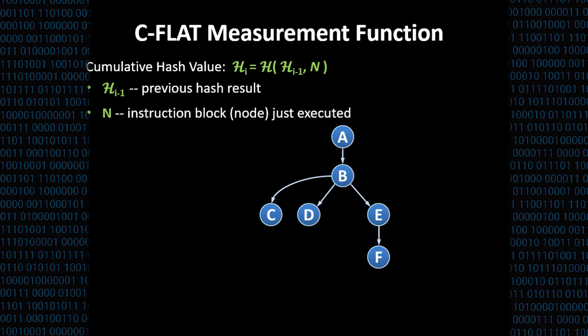Inspired by the traditional static binary attestation, which calculates a hash over the binary, we extend the scheme to also apply to control flow transitions, where we have a hash measurement function that takes two inputs. One is the previous hash, meaning the hash of the previous control flow transition, and the node just executed. Given a simple control flow graph, the hash calculation would work as follows. We first start with a start value of 0, because we have no previous hash value available, and measure also the node that has been executed in this example, node A.